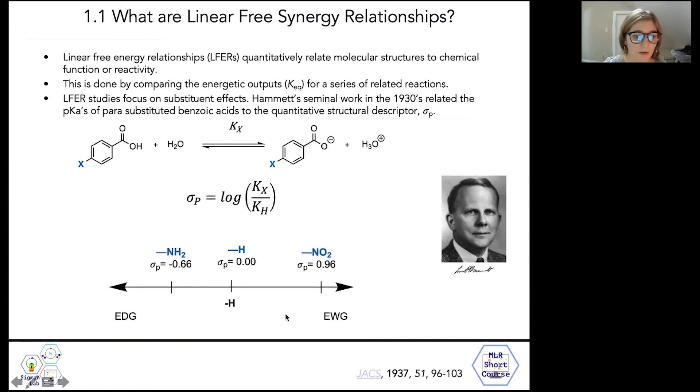As we know, electron withdrawing groups shift this equilibrium to the right, therefore increasing the value of KEQ, because the withdrawing groups stabilize the anion that is formed over the course of this reaction by induction. A nitro group is strongly electron withdrawing and has a sigma para value near positive one.